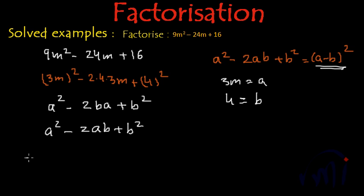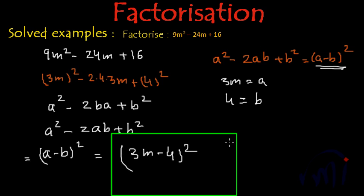So this can be written as a minus b whole square, which will be equal to 3m minus 4 whole square. So the factors of 9m square minus 24m plus 16 is actually 3m minus 4 whole square.